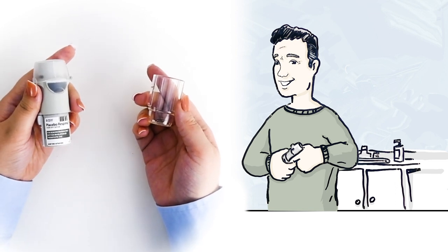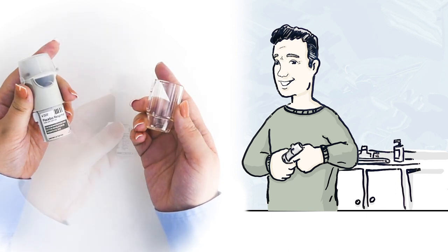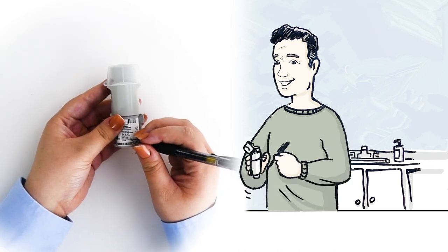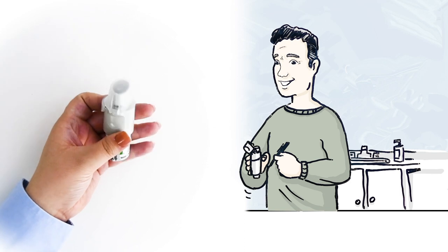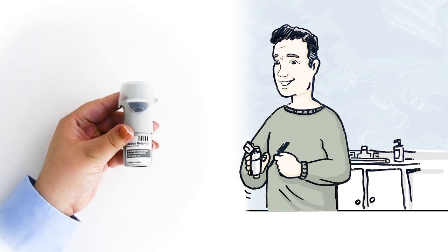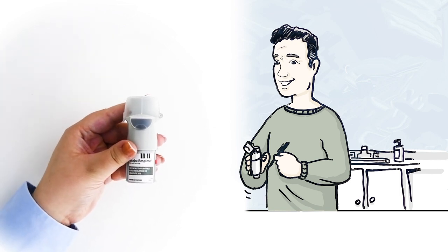I point out the piercing element and remind Henry to be careful not to touch it. Next, we write the discard by date on the label. Once the medicine is put into the inhaler, it is good for three months. So, the discard date is three months from today's date.